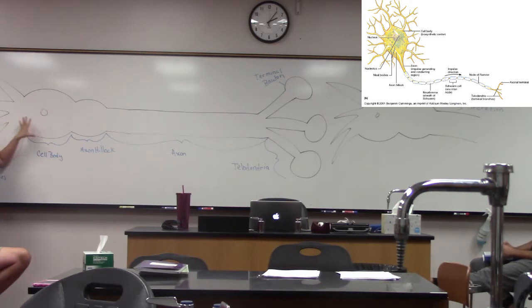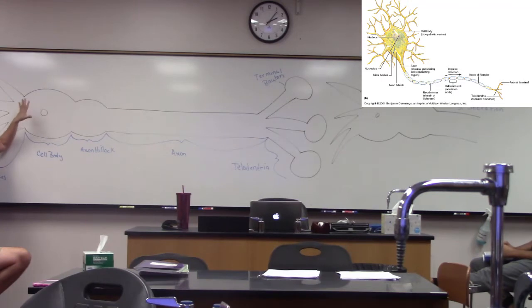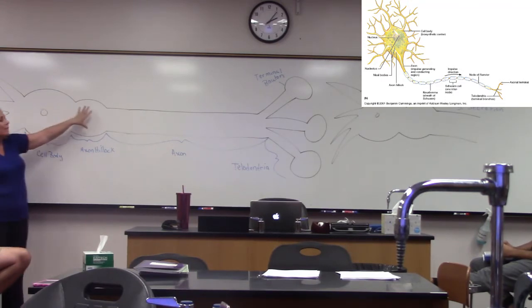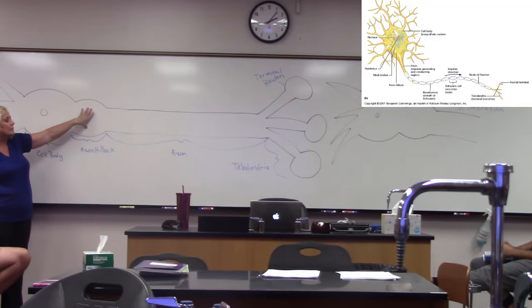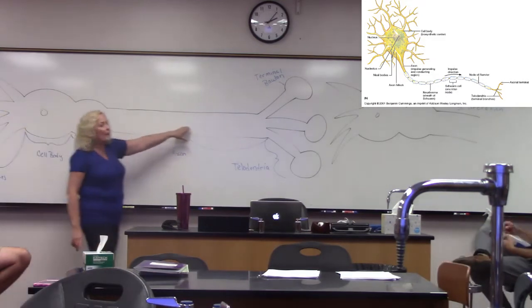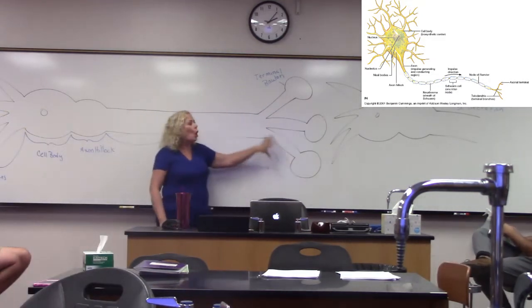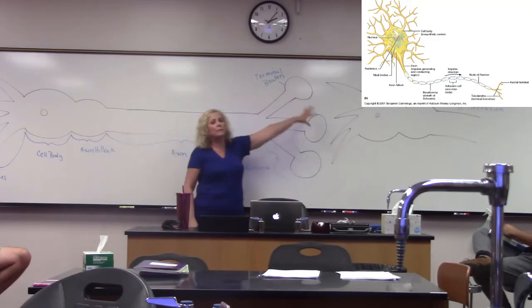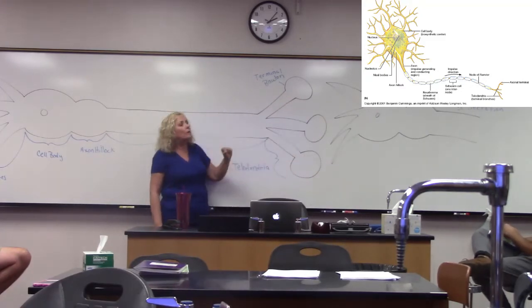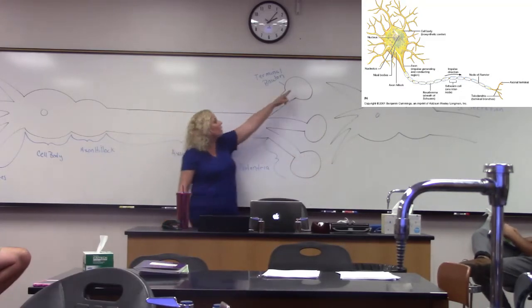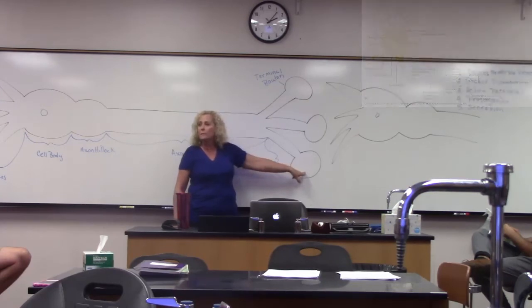In the cell body, this is where all the organelles are located — Golgi apparatus, endoplasmic reticulum, all of that. And then we have the axon hillock that sits next to the cell body, along with the axon. At the end here, this is all referred to as the telodendria.